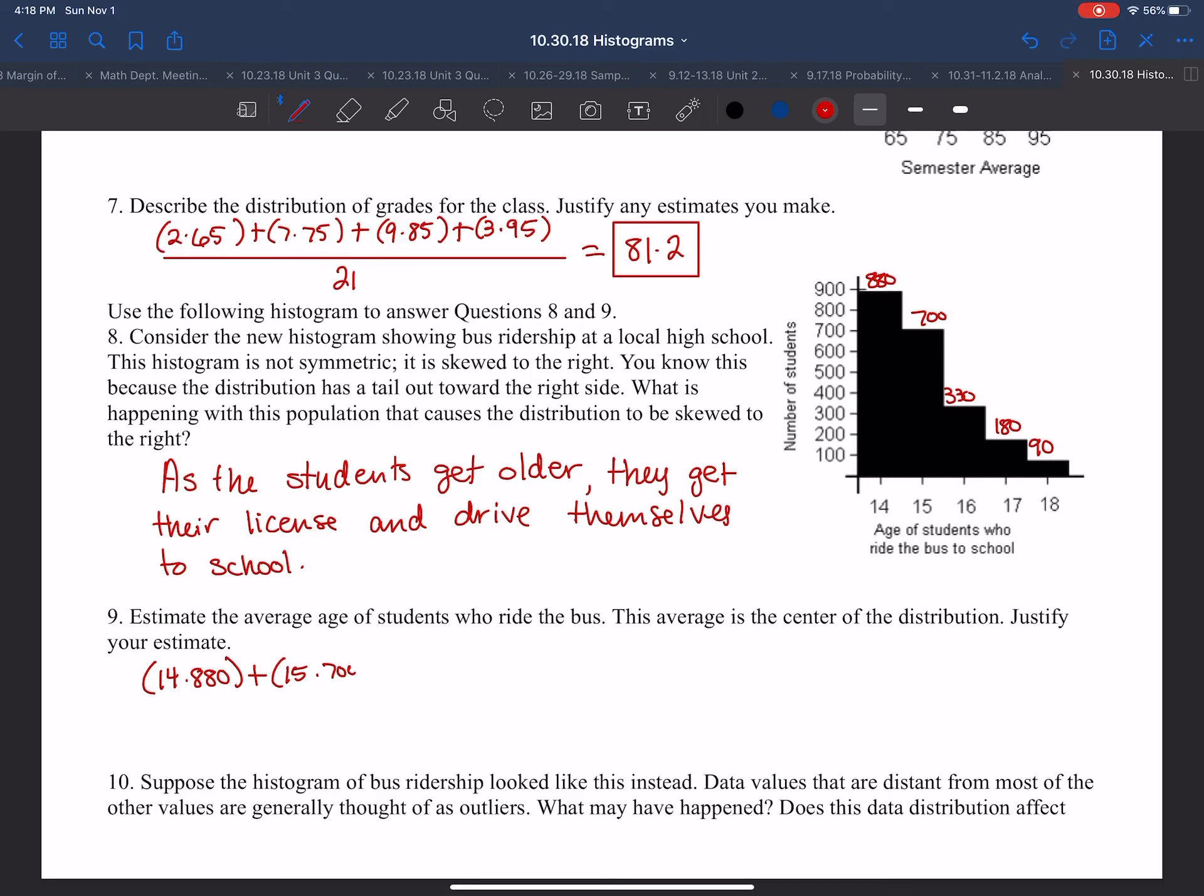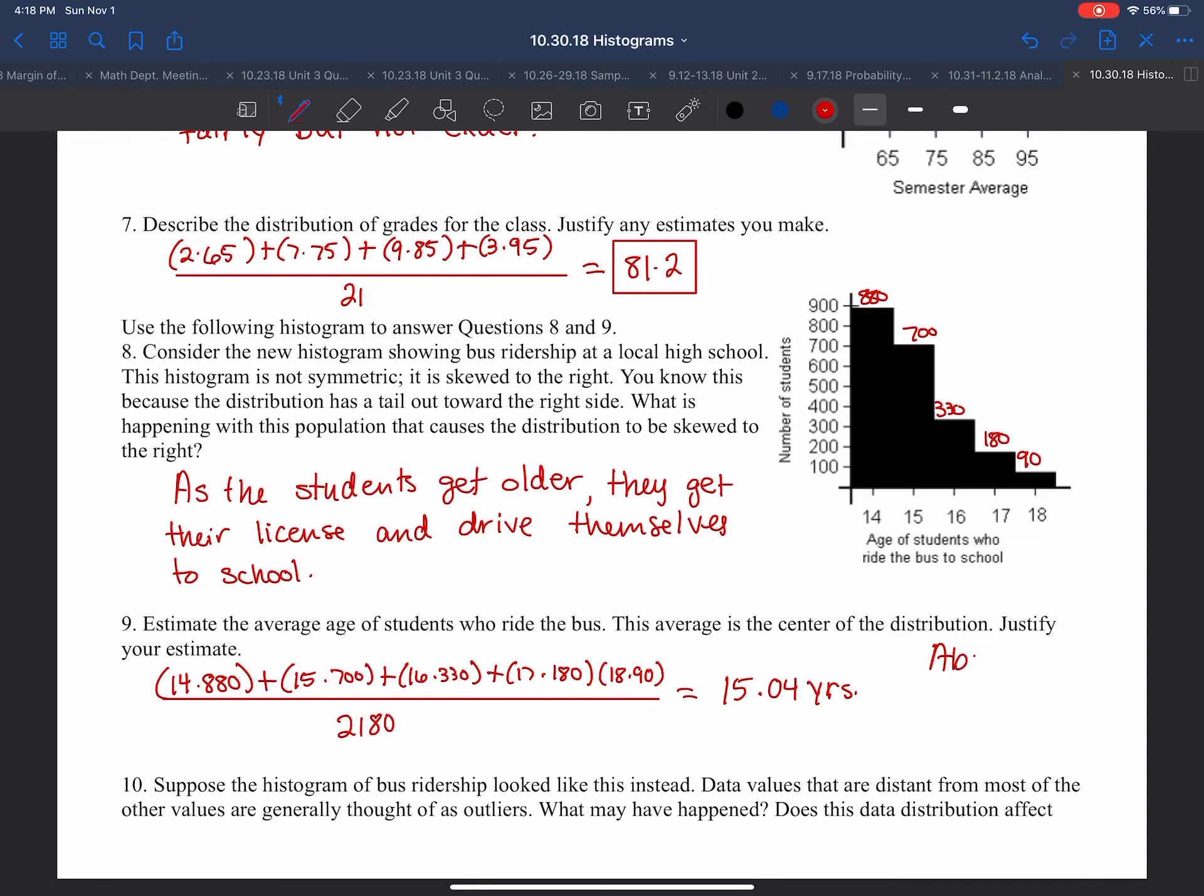So I'm going to have 14 times 880, plus 15 times 700, plus 16 times 330, plus 17 times 180, plus 18 times 90. And if I divide by the total number of students, we have about 2180, and that equals 15.04 years. So about 15 years old is the average student who rides the bus.